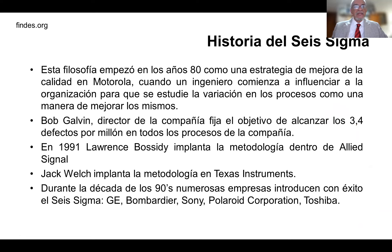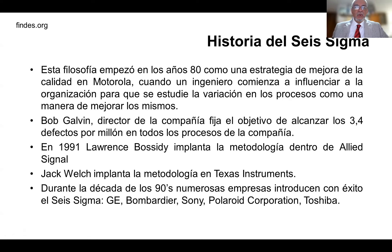¿Cómo surge Six Sigma? Esta metodología empezó en los años 80 como una estrategia de mejora de calidad en Motorola. Uno de los ingenieros, Bill Smith, comenzó a influenciar a la organización para que se estudiara la variación de los procesos como manera de mejorar los mismos. Tuvo tanto éxito que Bob Galvin, el director de Motorola, fijó el objetivo de alcanzar 3.4 defectos por millón en todos los procesos de la empresa, lo que les valió el Premio Malcolm Baldrige en 1988, el Premio Nacional de Calidad de los Estados Unidos.